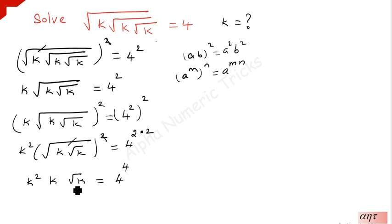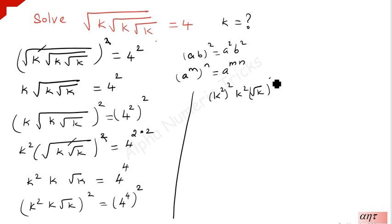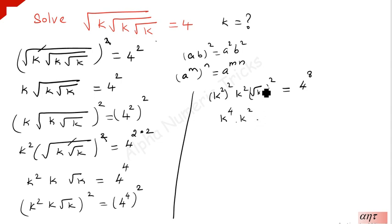Again, we have to square on both sides. Then this root will be eliminated and you can get the value of k. Squaring on both sides: k squared times k times root k, the whole squared is equal to 4 to the power 4, the whole to the power 2. Which is equal to k squared whole squared, which becomes k to the power 4, times k squared times root k whole squared. Using a^m whole to the power n = a^(m×n), here 4 times 2 is 8. So k to the power 4, and k squared times this square root and square get cancelled. You have k to the power 4 plus 2 plus 1 is equal to 4 to the power 8.